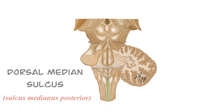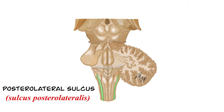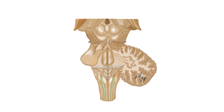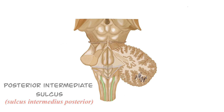On the posterolateral side, the posterolateral sulcus extends. This sulcus is also known as sulcus posterolateralis in Latin. Between the posterior median sulcus and the sulcus posterolateralis there is the posterior intermediate sulcus, also known as sulcus intermedius posterior in Latin.